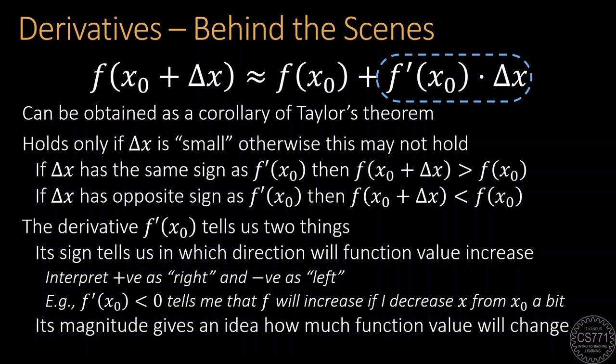Thus, the derivative tells us two things. Its sign tells us in which direction will the function value increase, left or right. And more importantly, its magnitude tells us if the change in the function value will be large—that is, it will go up or down a lot—or whether the change will be small.